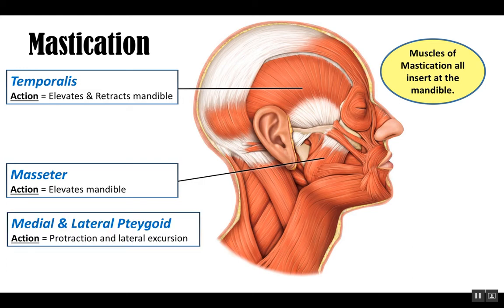Then you have two muscles called pterygoids — a medial and lateral pterygoid. They are very deep muscles, so you don't see them on this drawing; we'll need to use another drawing to identify those two muscles. But they help to protract and perform lateral excursion, which is side-to-side movement.